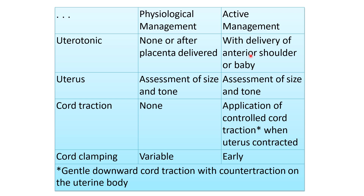In both active and physiological management, we assess the size and tone of the uterus. For cord traction: in physiological management we do not apply it, but in active management we apply controlled cord traction when the uterus is contracted.